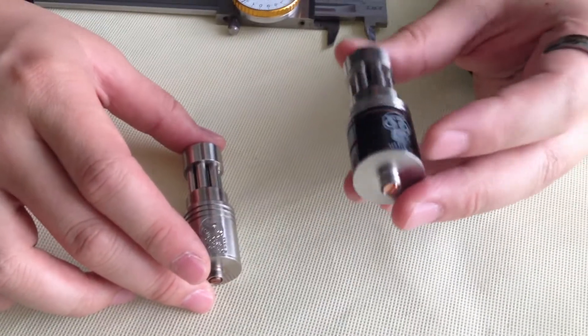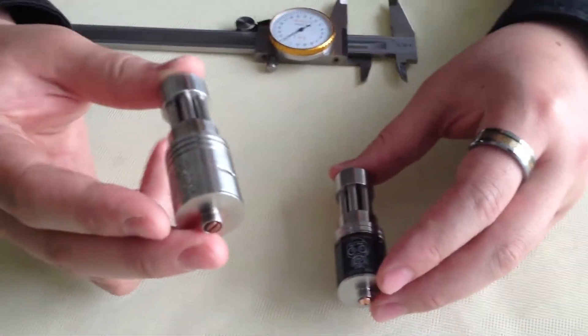This is a carbon fiber covered Little Boy. This is a stainless steel Little Boy RDA.